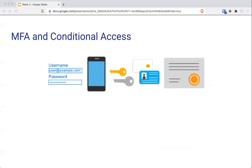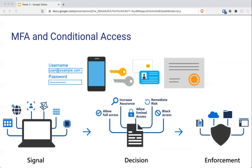Conditional access is a tool that Azure Active Directory uses to allow or deny access to resources based on identity signals — who the user is, where the user is, or what device they're requesting from. It provides a more granular MFA experience. Users may not be challenged for a second authentication factor if they're at a known location, but they could be challenged for MFA if they're in an unexpected place. Conditional access collects signals, makes decisions based on those signals, and then enforces a decision by allowing or denying access.